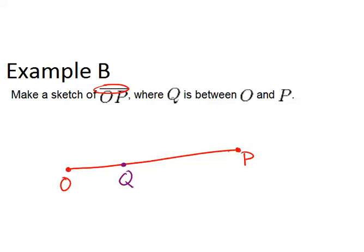It could be closer to P than to O. The main thing is Q has to be on the segment. You can't just put Q over here because then it is not technically between as far as math is concerned.